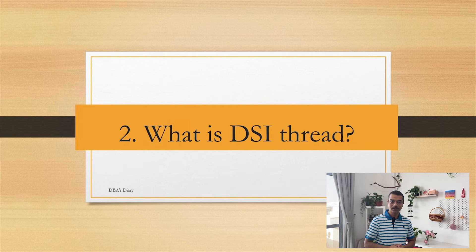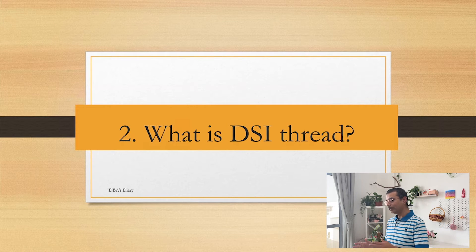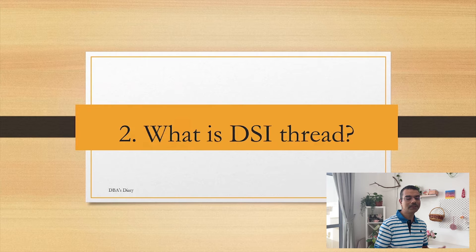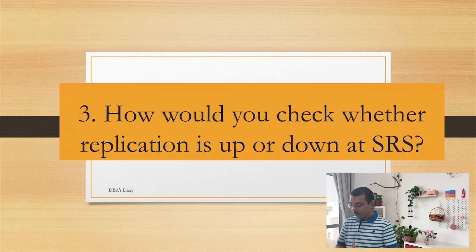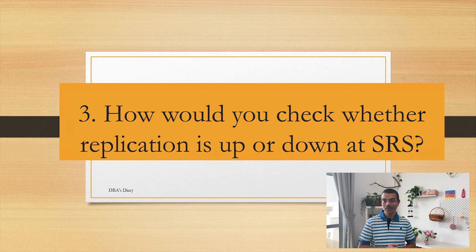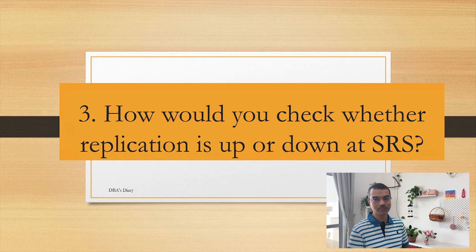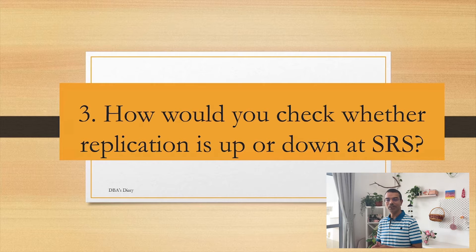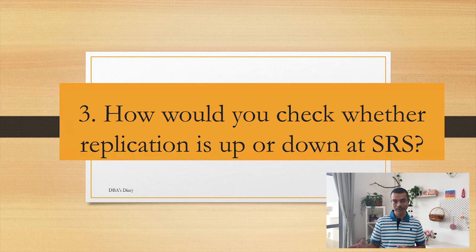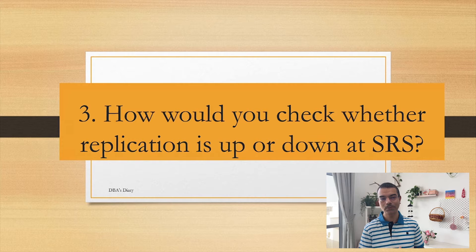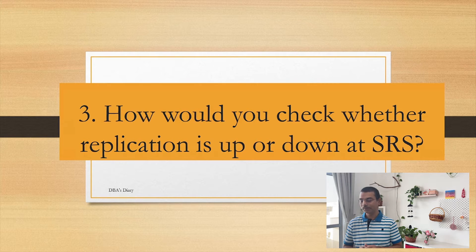The next question is: what is DSI thread? This is a very straightforward, definition-based question. The full form of DSI itself will give you the hint or the answer — what it does and why it is used. So what is the DSI thread? The next question is: how would you check whether replication is up or down at SRS level — Sybase Replication Server level? This is a very straightforward command. You can run the command and check the status of the thread — is it up, down, suspended, or not running.